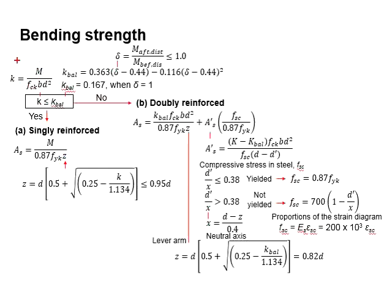The k is given by this equation, which is in the function of M per fck bd squared. The calculated k value here needs to be checked against a number of 0.167.